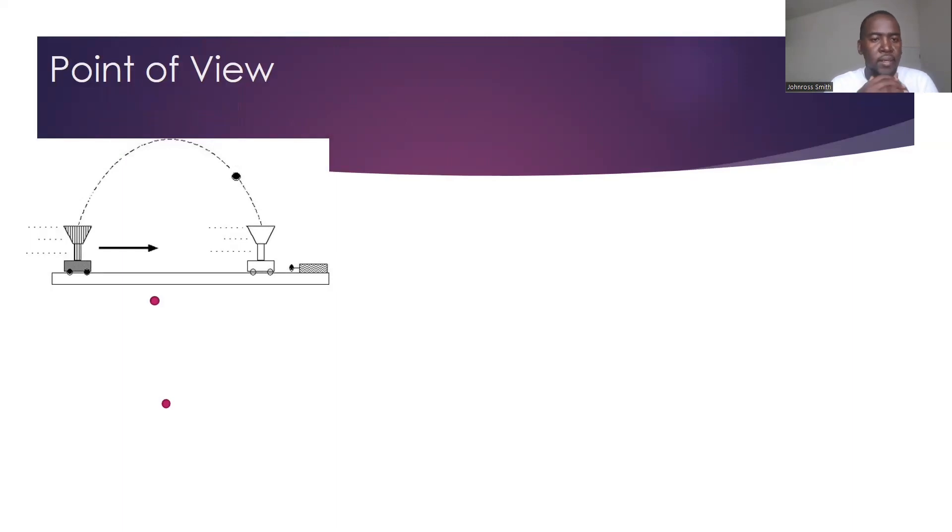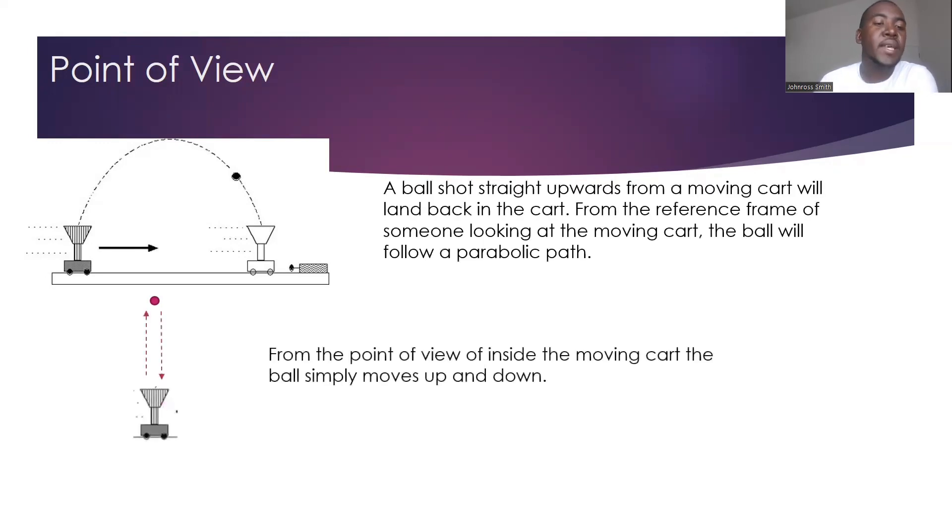If we look at this example, if we take an object that is fired from a moving cart and then it's being caught by that same moving cart, then we have two cases where we can see this object. The first one is if I'm outside of that cart and just observing that activity or that event, I will see it in a parabolic motion. When the ball is fired upwards and then the cart goes forward, it receives the ball in the front.